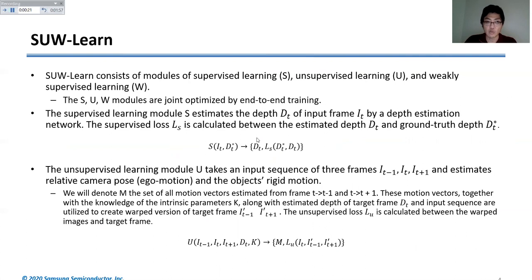The unsupervised learning module U takes multiple frames, for example three frames I_{t-1}, I_t, I_{t+1}. It estimates the relative camera pose (ego-motion) as well as the object motion (rigid motion). This motion can be used together with the estimated depth map from the supervised learning module to do 2D to 3D inverse projection, and then warping to check whether the motion and depth correspond to the actual information. So the accuracy of the estimated depth map can be refined.